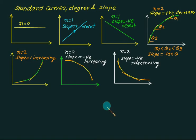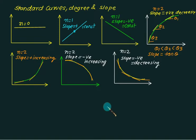Here we have an abstract of all the figures. Figure number 1 is degree equals to 0, that is no load condition. Then we have a straight line indicating the positive slope, degree equal to 1.